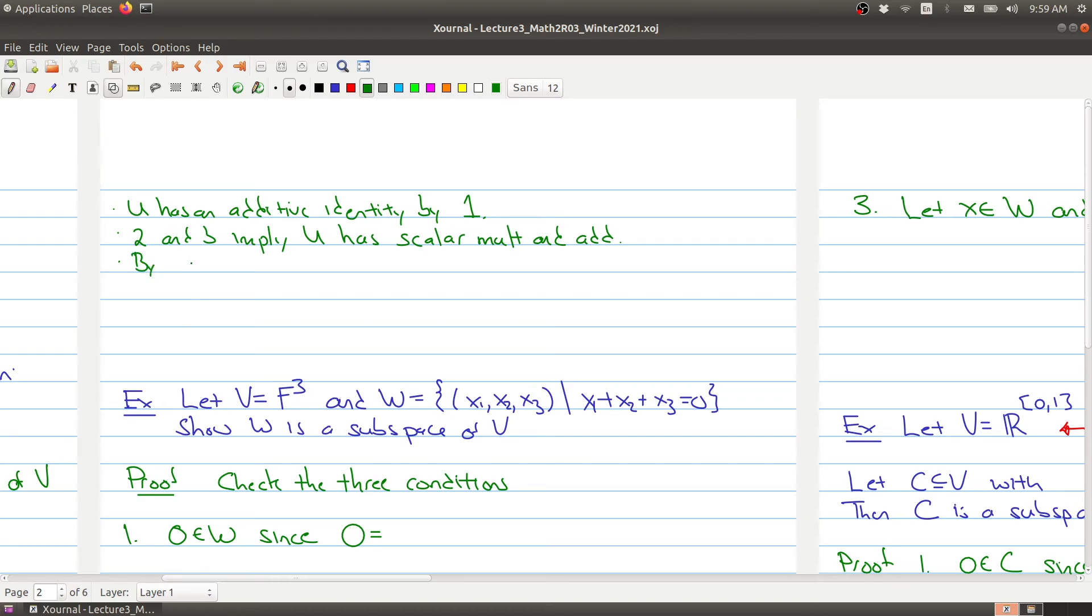But by fact 3, that it's closed under scalar multiplication, we have that if u is in U, then negative 1 times u is inside of U. But we proved last time that when you take a vector and you multiply it by negative 1, you get the additive inverse of that vector. So all additive inverses are also in U.